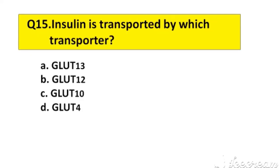Question number 15. Insulin is transported by which transporter? A. GLUT13, B. GLUT12, C. GLUT10, D. GLUT4. The right answer is option D, GLUT4.